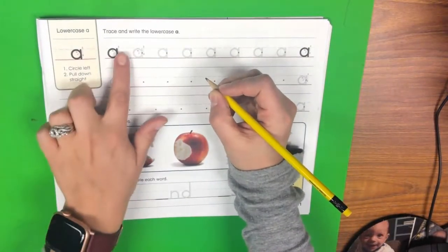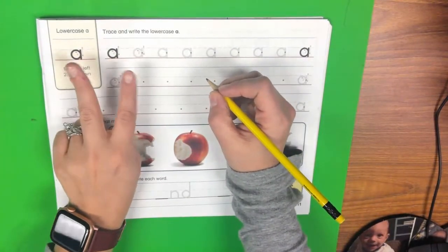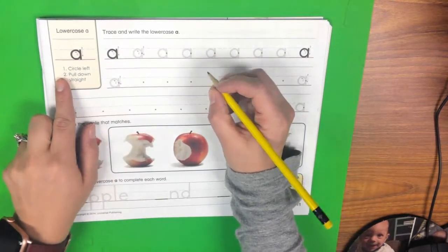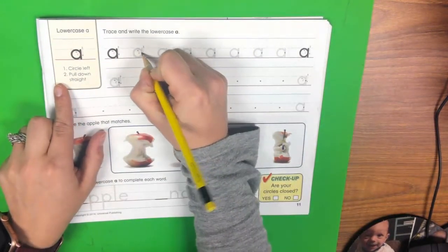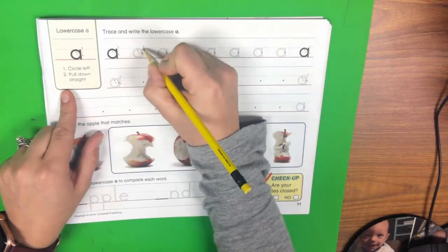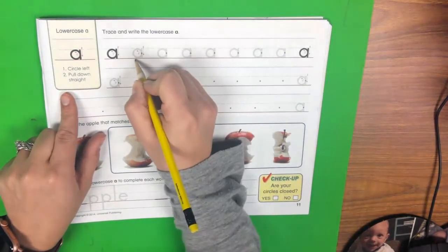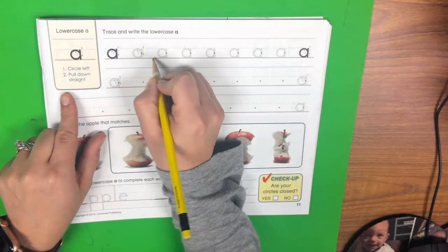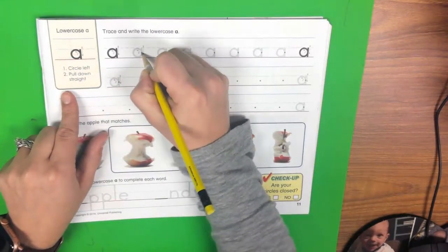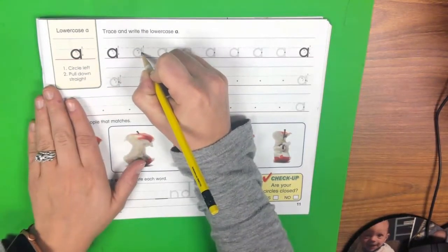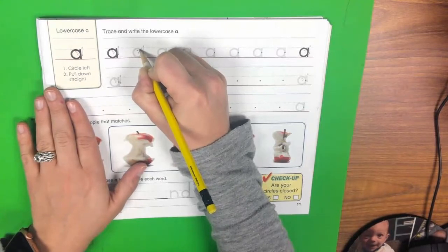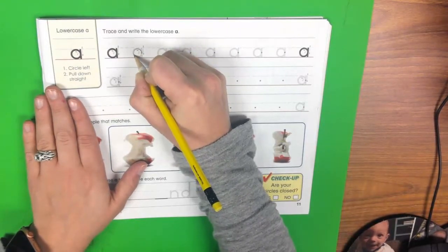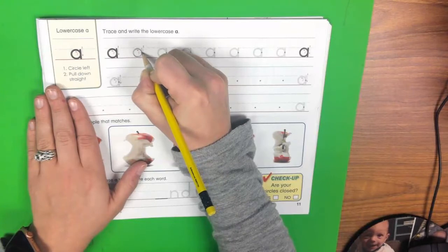This letter, lowercase a, is two strokes. The first stroke is a circle left. So you're going to start at the green dot, that's right in between the dashed line and the red bottom line or the ground line right in the middle there. And you're going to circle left. That means that you're going to go left, come back to the dot, and stop.